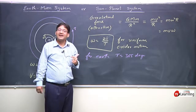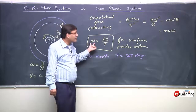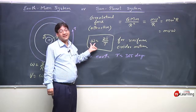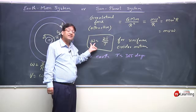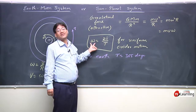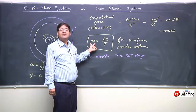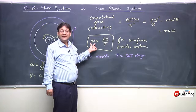We can determine the Moon's angular velocity around Earth, Earth's angular velocity around the Sun, or any planet's angular velocity using these relations.